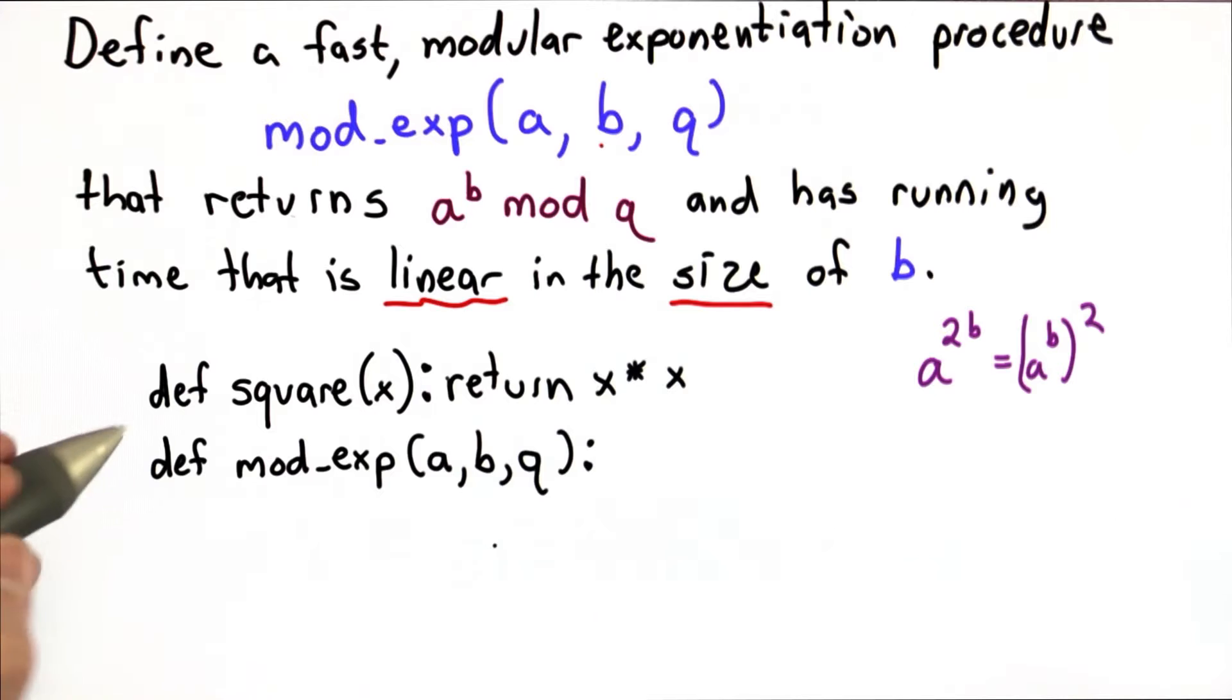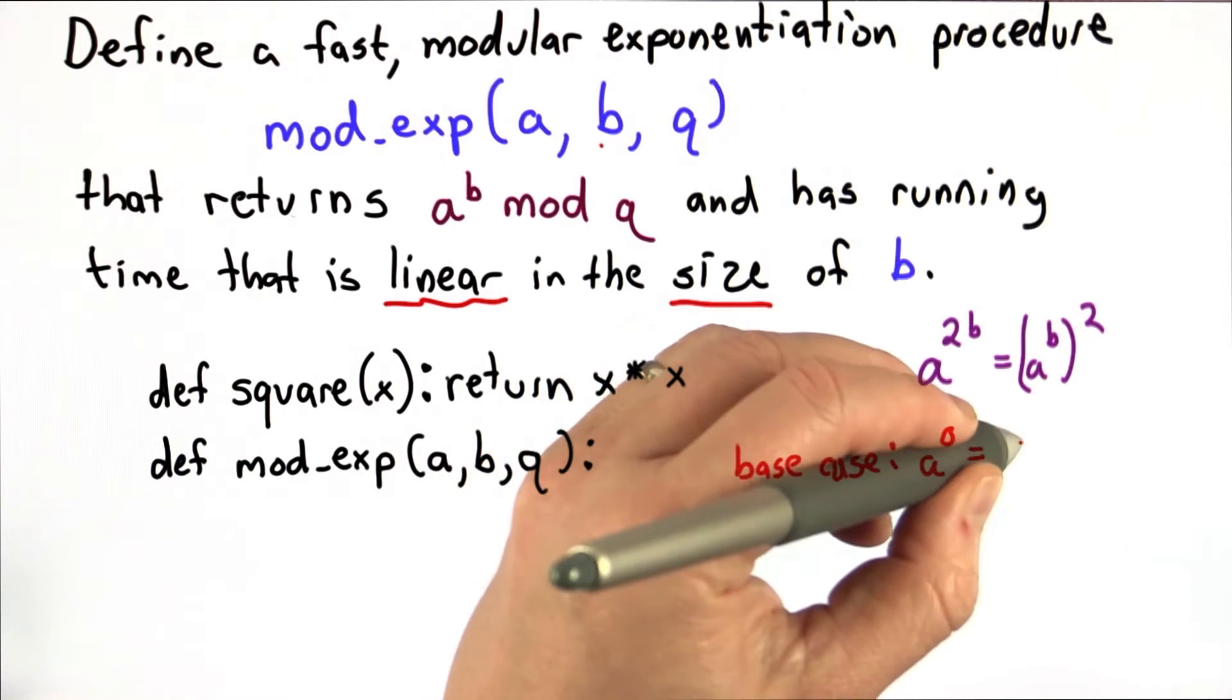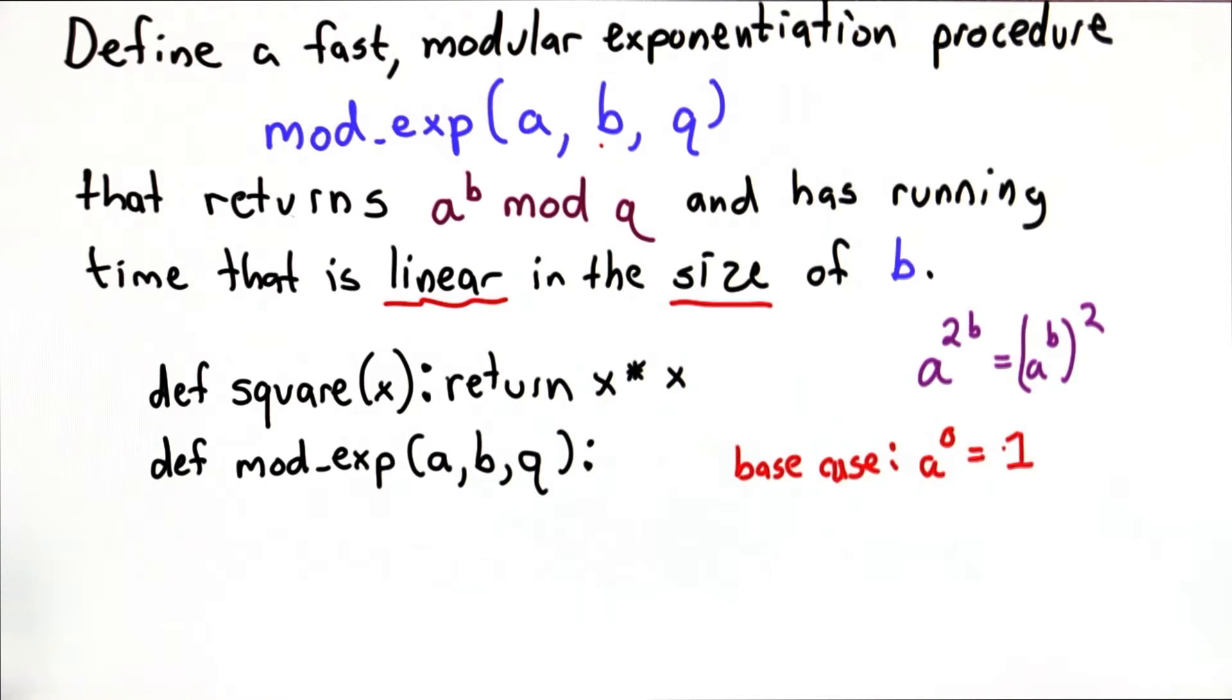And the easiest way to do this is to do it recursively. So our base case is when b is 0, anything raised to the 0 power is defined as having the value of 1.